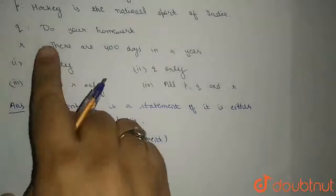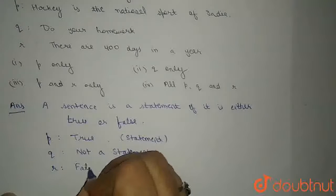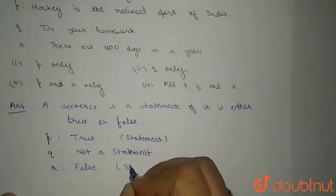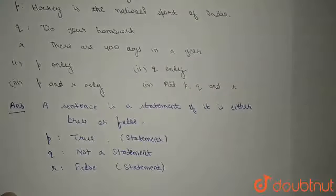Now, R says: There are 400 days in a year. I mean, pata hai, 365 days hotte hai. So this is a false statement. Therefore, it is a statement. This is a false sentence and it is a statement.